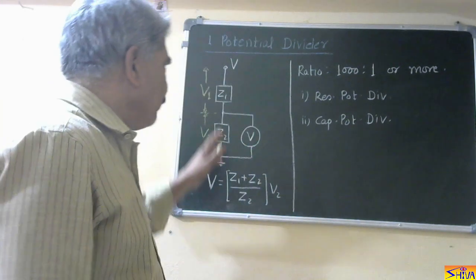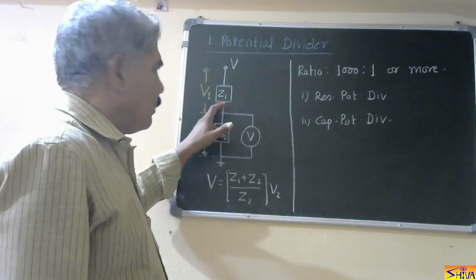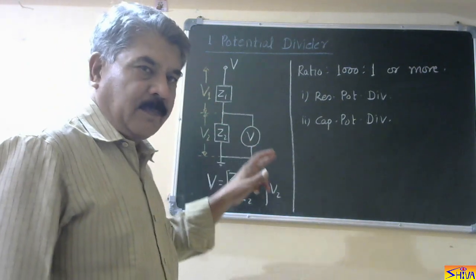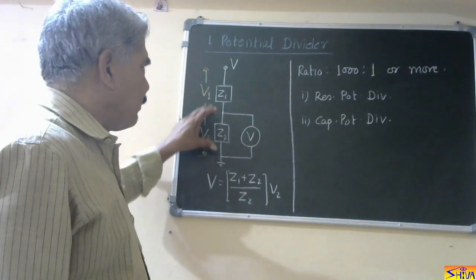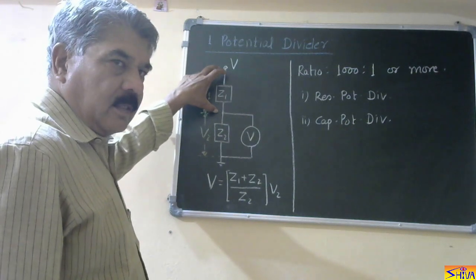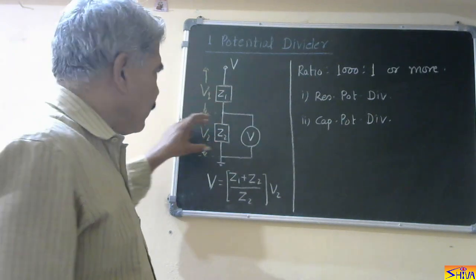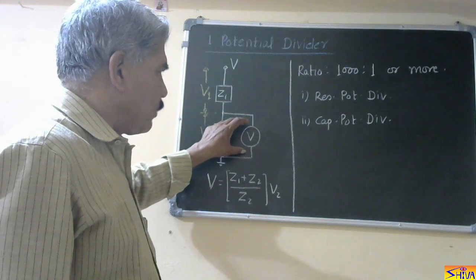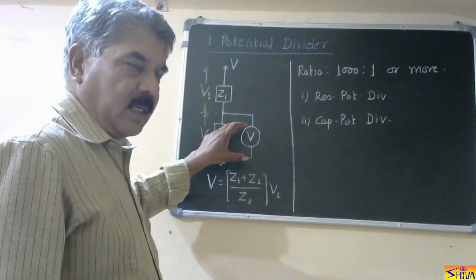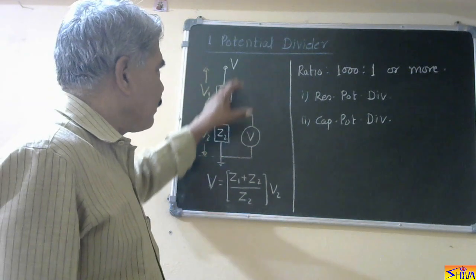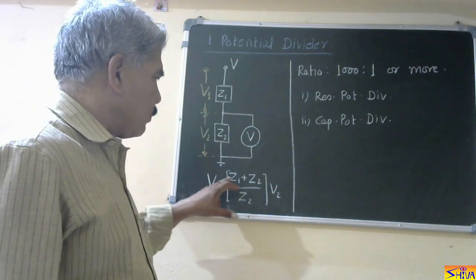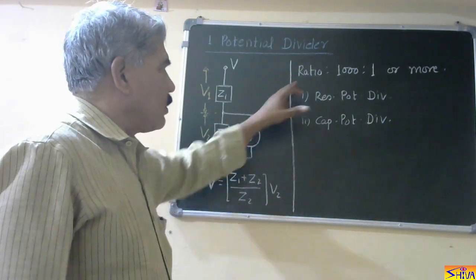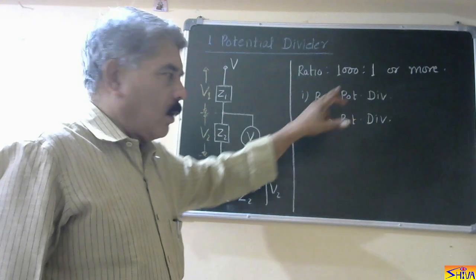This method is simple. It consists of a potential divider which has two branches. Z1 and Z2 are the impedances of the two branches respectively. Z1 and Z2 are selected such that the voltage drop across Z1 is maximum and only a few hundred volts appear across Z2. The voltmeter connected across the low voltage arm is calibrated accordingly. The relation is V = (Z1 + Z2) / Z2 × V2. The ratio is approximately 1000 to 1 or more.